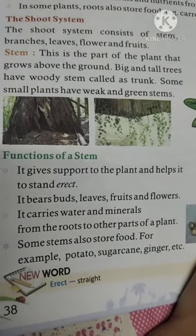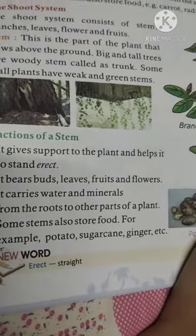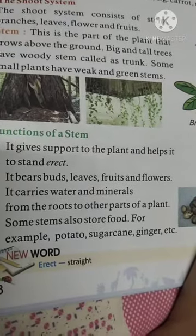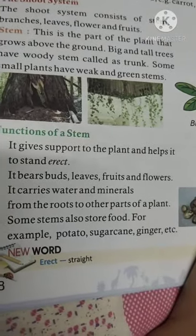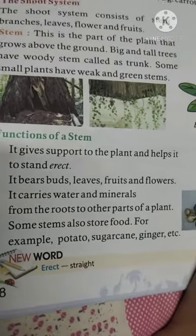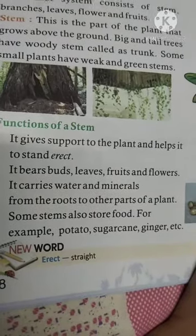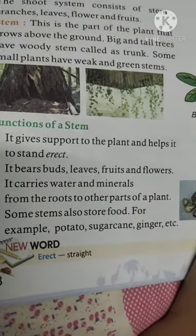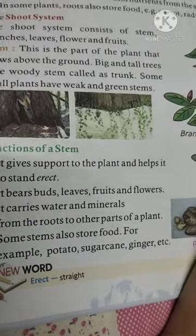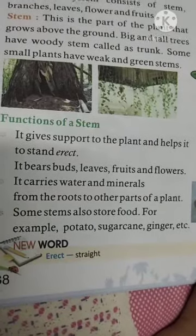Through the roots, water comes into the stems and is transported to different parts like leaves, fruits, and other areas. Some stems also store food, like potatoes, sugarcane, and ginger. Sugarcane is also a stem that contains food.